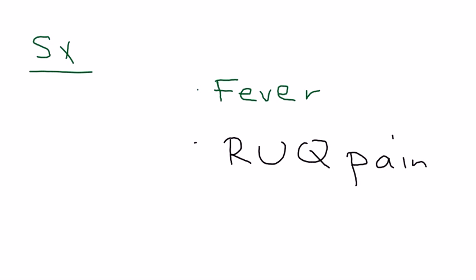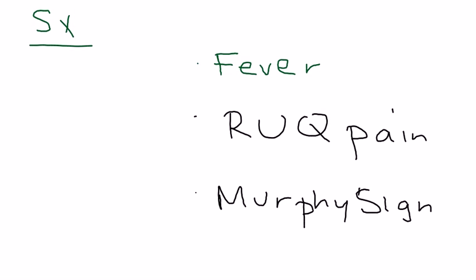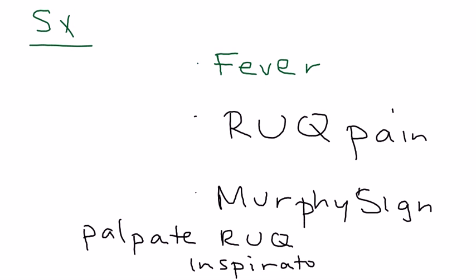The symptoms are not incredibly specific but can help. There is right upper quadrant pain, which at least is localized to that region. One specific and very helpful sign is Murphy's sign — inspiratory arrest on palpation of the right upper quadrant. When you palpate the right upper quadrant, the patient halts their inspiration; it's hard for them to take in a breath. Other non-specific symptoms include nausea and vomiting.